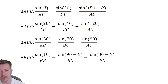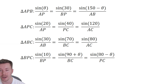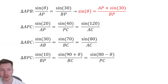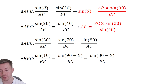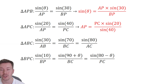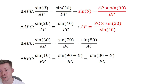The first thing I'm going to do is rearrange for sine theta, looking at the top equation. I'll multiply both sides by AP so that AP ends up on the top. Then I need AP itself, so I use the second equation from triangle APC — that gives me AP as the subject: AP equals PC times sine 20 over sine 40, by cross-multiplying and dividing by sine 40.